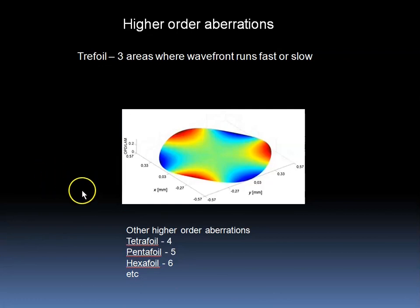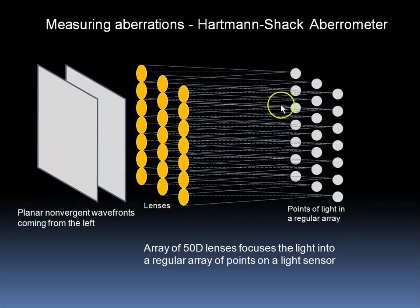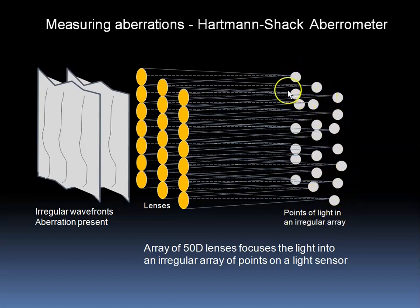Here is an example of trefoil where three areas of the wavefront are running ahead of the others. One way to measure aberrations is to use the Hartmann-Shack aberrometer. Here we show planar wavefronts coming from the left, reaching an array of lenses that focuses the light into a regular array on a sensor. With irregular wavefronts, the array of lenses will focus the light in a rather less uniform manner, and this non-uniformity can be measured.